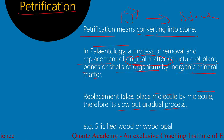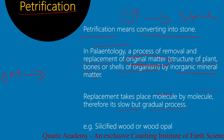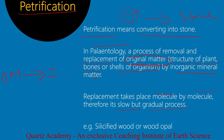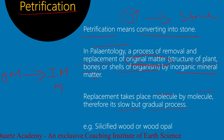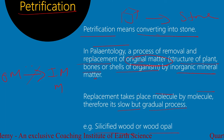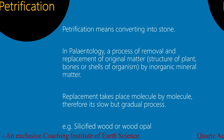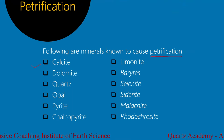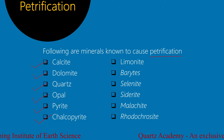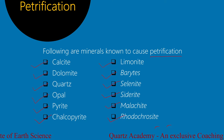The organic matter is completely replaced by inorganic mineral matter through molecule-by-molecule replacement — it is a slow but gradual process. Example: silicified wood and wood opal are the best examples of petrification. Some following minerals are known to cause petrification: Calcite, Dolomite, Chert, Opal, Pyrite, Chalcopyrite, Limonite, Barite, Selenite, Siderite, Malachite, Rhodochrosite, and many more.